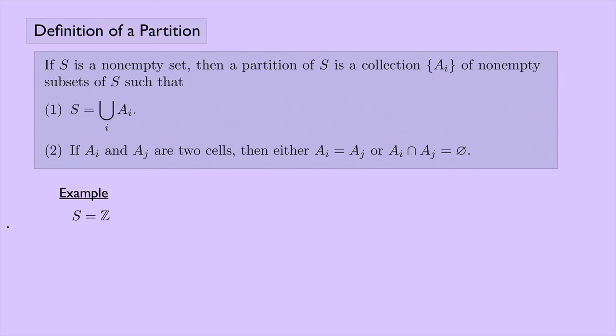Here's an example. Suppose the set S is the set of integers, and A1, that would be our first cell, is the set of even integers, and A2 is the odd integers. And in this case, if we look at the union of A1 and A2, we do indeed get the set of integers. And if we look at A1 and A2, they don't have any overlap at all. They're completely disjoint. So that's a partition.